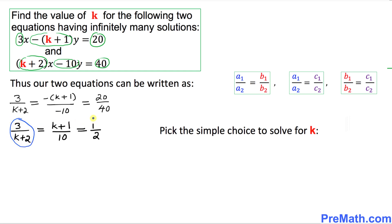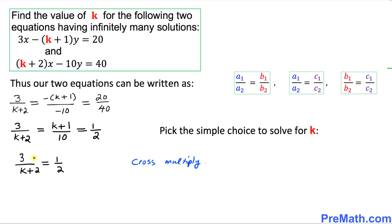I'm going to equate the first and last ratios: 3 over k plus 2 equals 1 over 2. Now I'll cross-multiply — 3 times 2 and 1 times k plus 2 — giving us 6 equals k plus 2.